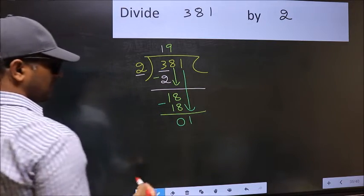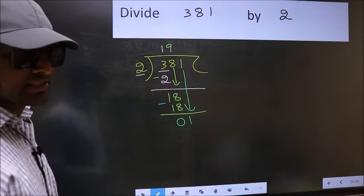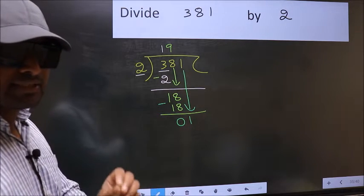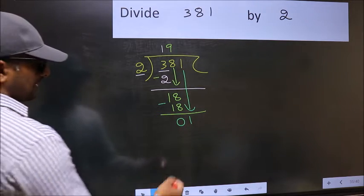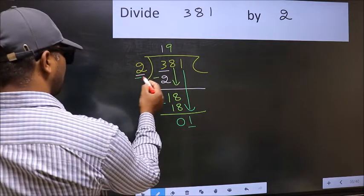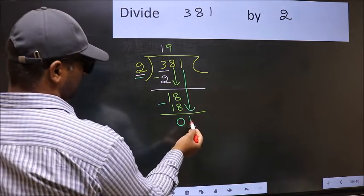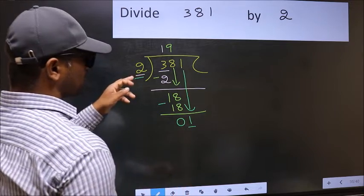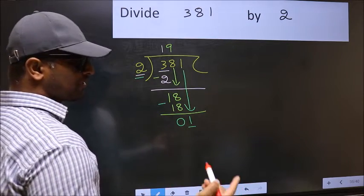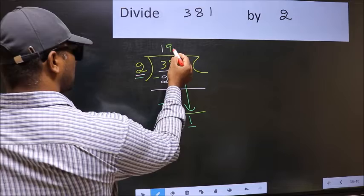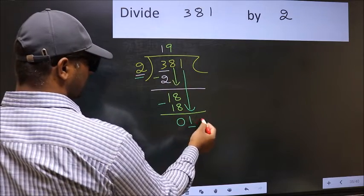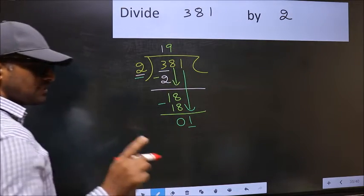After this step, the mistake happens. And the mistake is this. Here you have 1, and here 2. 1 is smaller than 2. So, what many do is, they directly put a dot and take 0 here. Which is wrong.